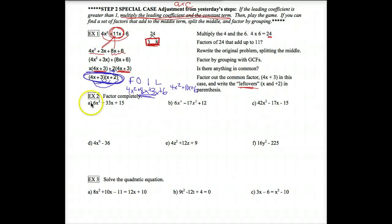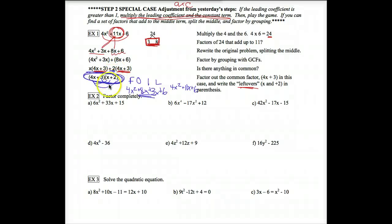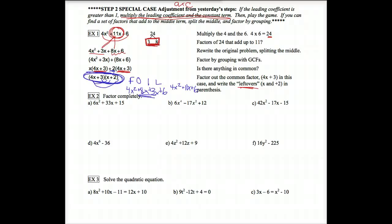Remember that we have a factoring order of operations. Just because we've reviewed this ax squared plus bx plus c doesn't mean we get to toss aside what we learned in the last lesson. We still need to look for GCFs first on every factoring problem. We should also still look for special patterns — is this a PST or a difference of squares — before we start doing all this work, because if you've got a special pattern it takes much less time.